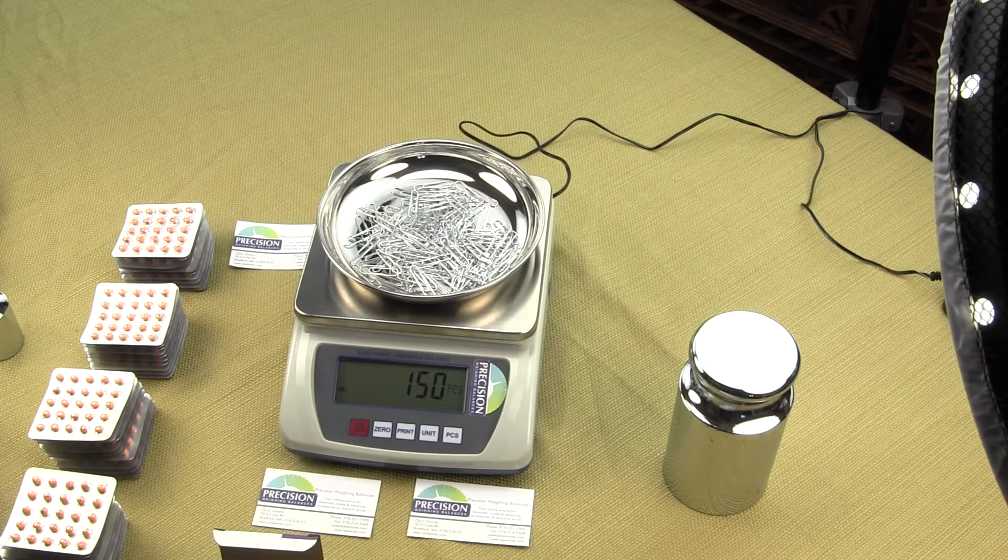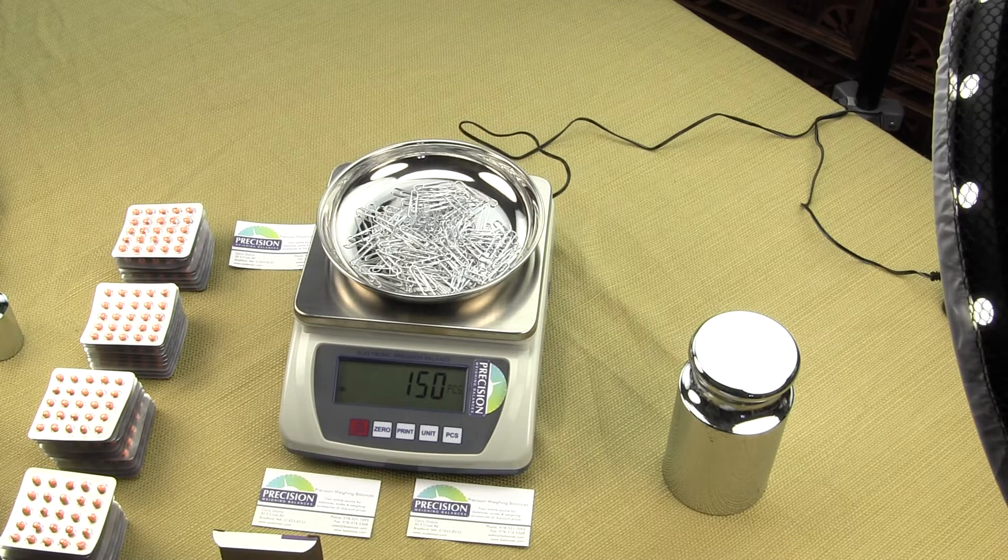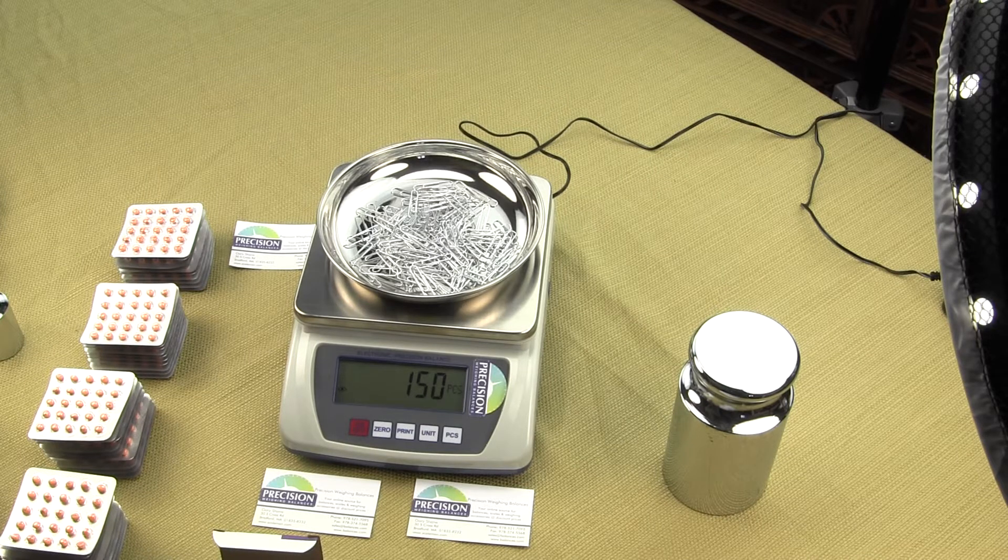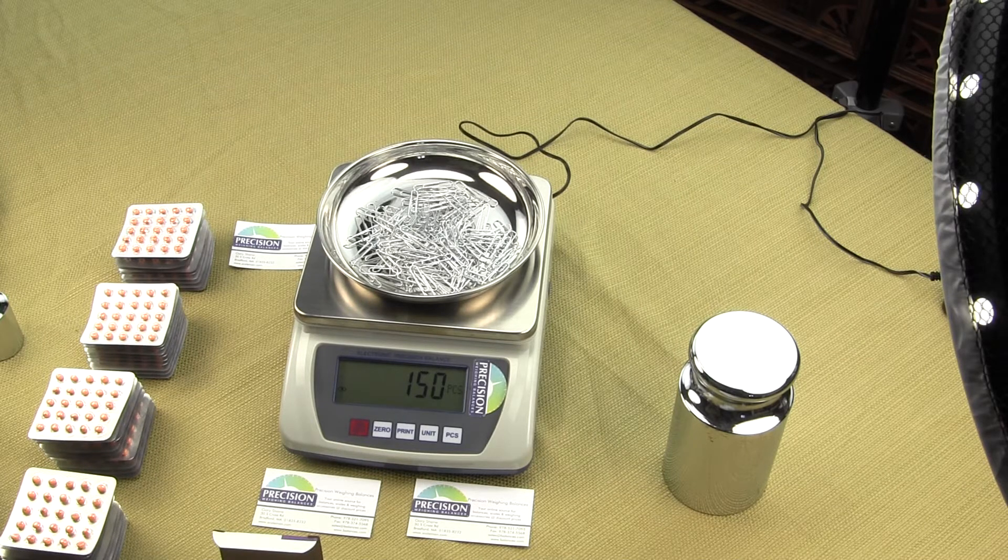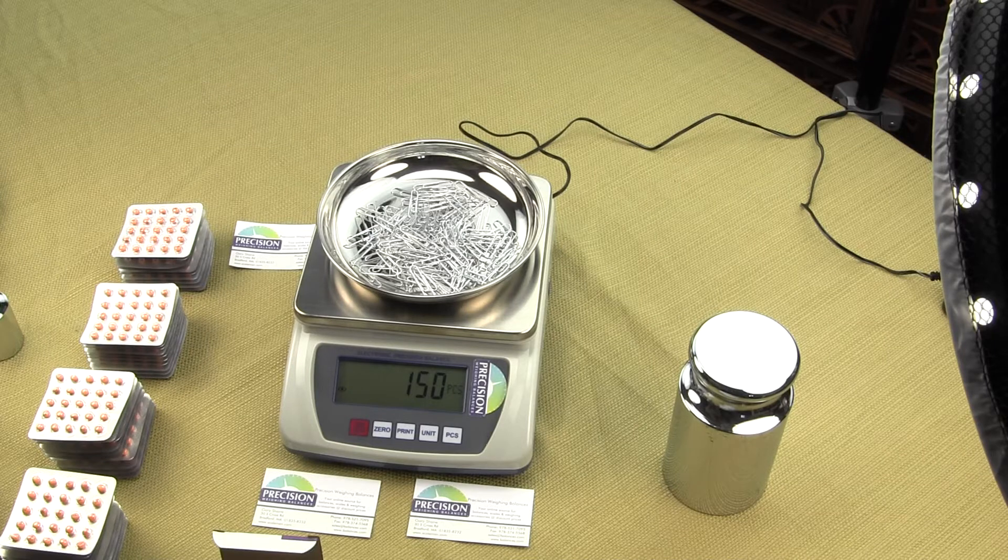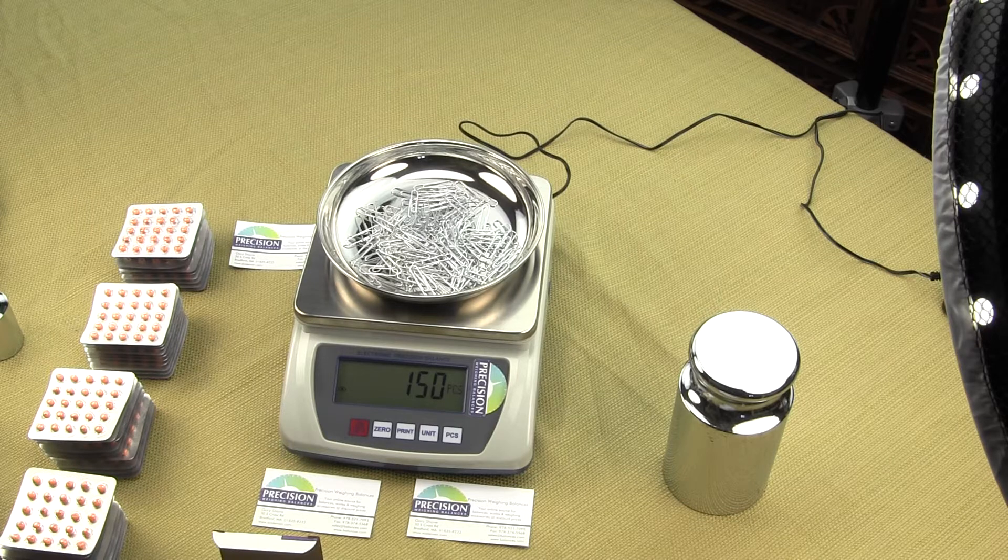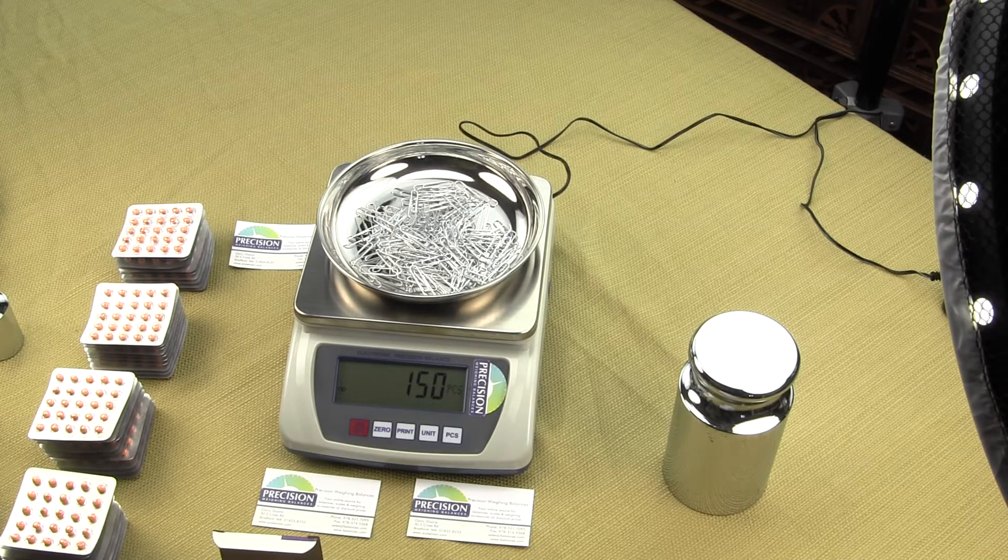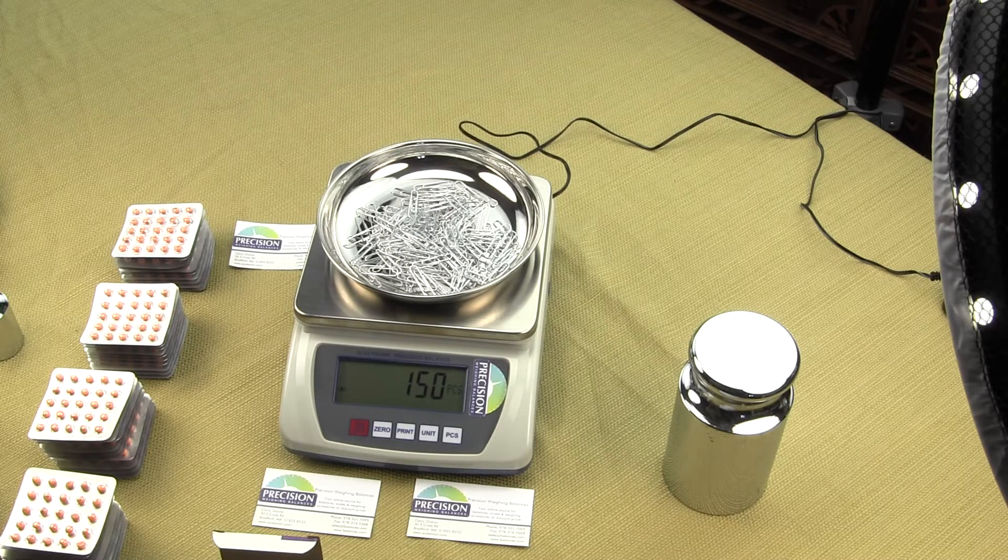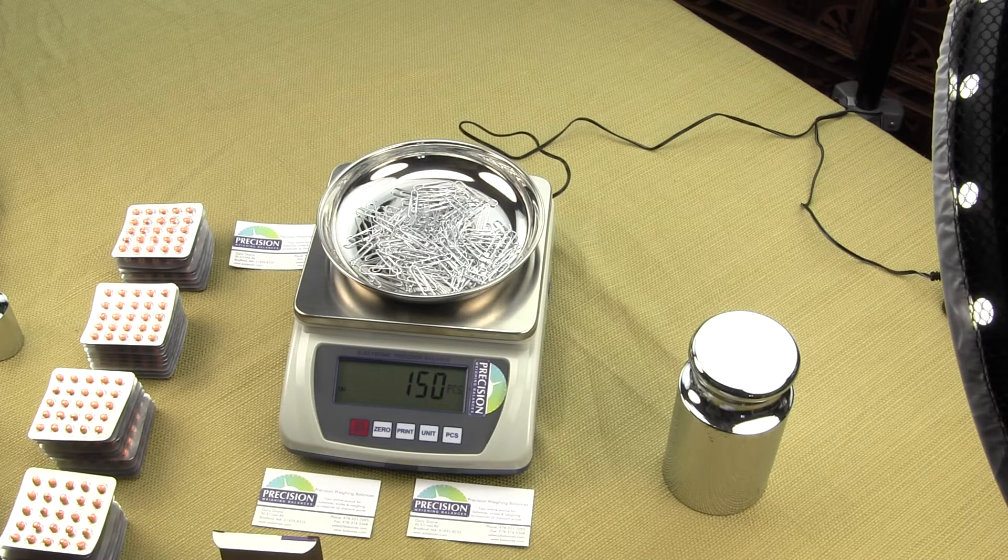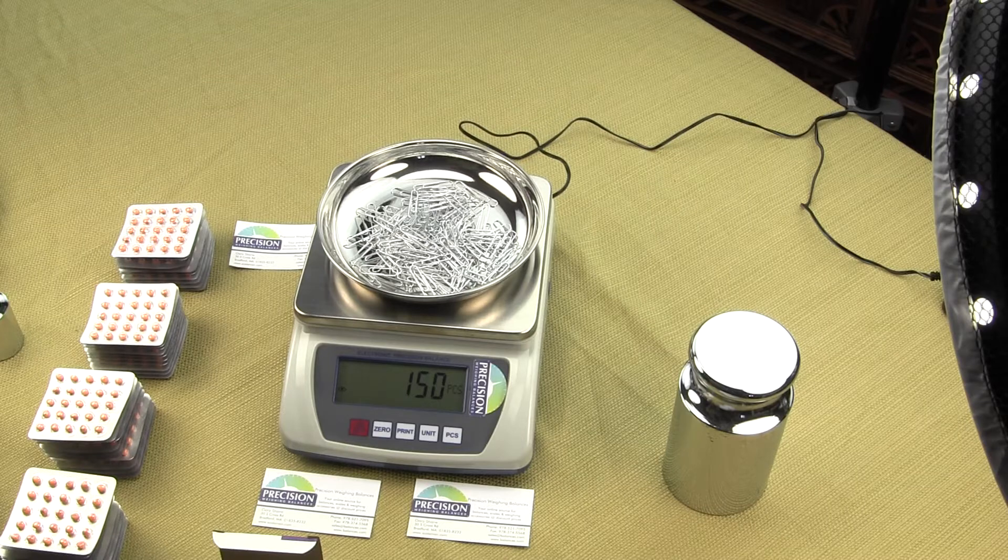Paper clips weigh about four-tenths of a gram. I always like to recommend, for a counting scale, you want four to five divisions. Your lightest part should be at least four to five divisions. For the EPB10K, I'm recommending that your smallest part weigh between 0.4 to 0.5 grams. Anything smaller than that, you're going to have some variations or not very accurate counts.